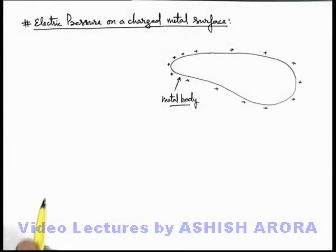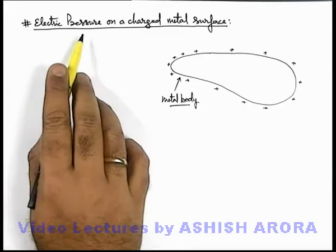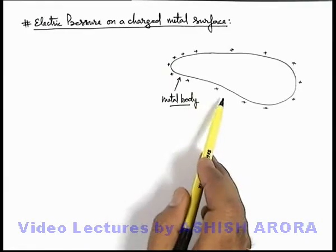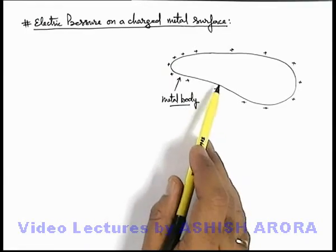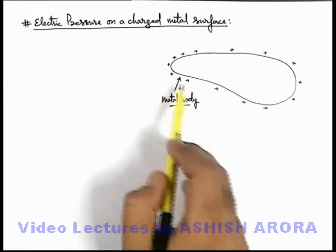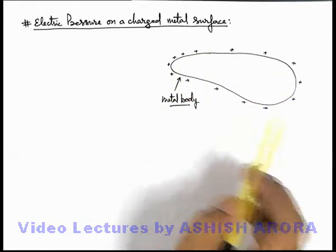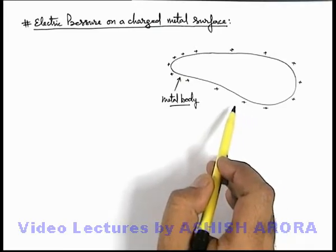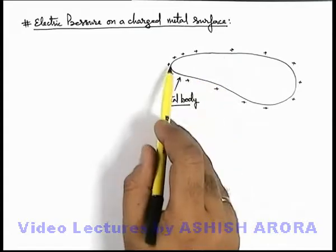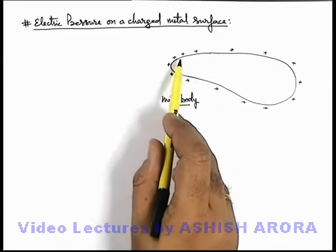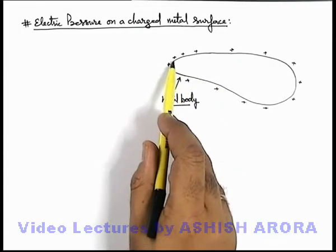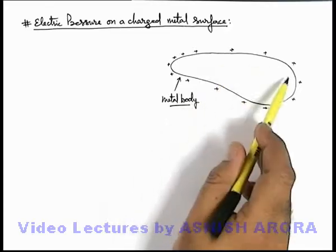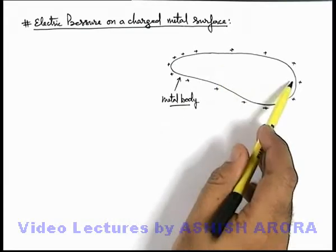Let's study a very important concept of electric pressure on a charged metal surface. We know that in case of a metal body, when we supply some charge to it, due to mutual repulsion all the charges will spread on the outer surface of the body. As discussed in electrostatics, the charge is distributed such that on zones where the radius of curvature is less, the charge density is more, and on relatively flat or broader surfaces, charge density is less.